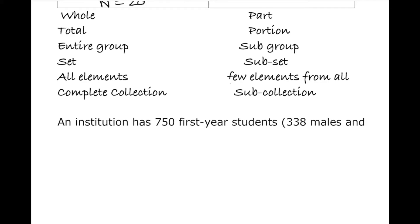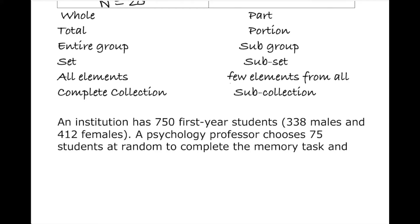Let's look at an example. An institution has 750 first year students, 338 male and 412 female, a psychology professor chooses 75 students at random to complete the memory task and answer a specific question. So obviously the question is going to be what is the population, what is the sample?